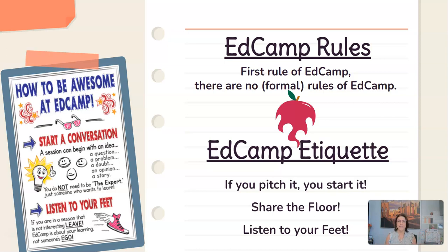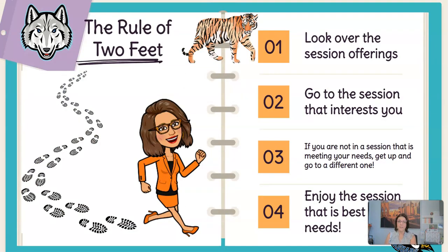It's not a big deal, I'm not insulted, I understand. It's not about ego — it's about getting what you need out of the day. So here's the rule of two feet a little bit further. You look over your session offerings, you see 'okay, this looks good, this is what I would like to go to.' It's not a bad idea to have a couple backups just in case. So you go to the session that interests you the most during that time period, and if you're not in a session that's meeting your needs, you get up and go enjoy the session that's best for you. The success of EdCamp really depends on you — if you go and sit in sessions that are not applicable to you and that you don't really have interest in, you're not going to get the most out of your day. So be your own best advocate and get up and go.